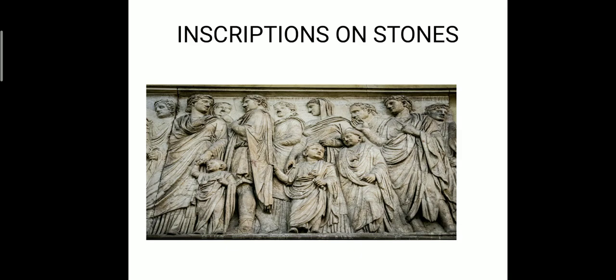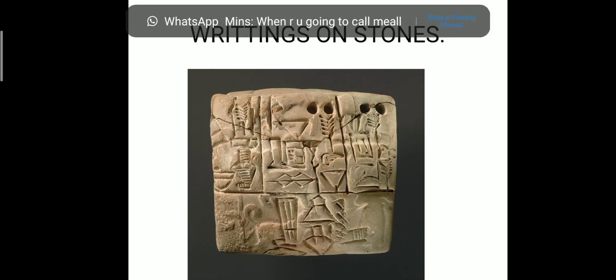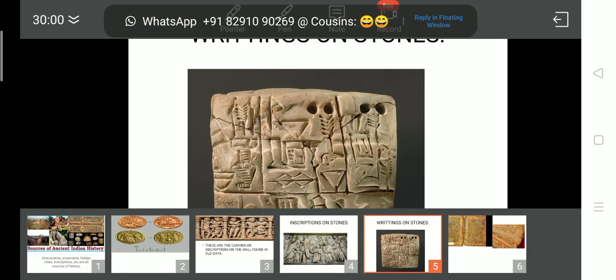This is also a drawn picture. This is also an inscription on stone from olden days. Clear, kids? See, on this piece of stone something is written. These all are nothing but sources to learn history. Okay, kids?